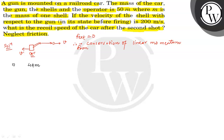तो अब इसका जो इधर की direction में momentum होगा और इसका जो इधर की direction में momentum होगा, वो equal होना चाहिए — यानि कि M1V1 = M2V2। जैसे हमने एक गोले को छोड़ा, तो 49m बचा। 49m की velocity हमने V मानी। यह equal to: shell का mass M, और यह जाती है velocity V से — that is equal to 0। इसको हमने capital V कर लिया।